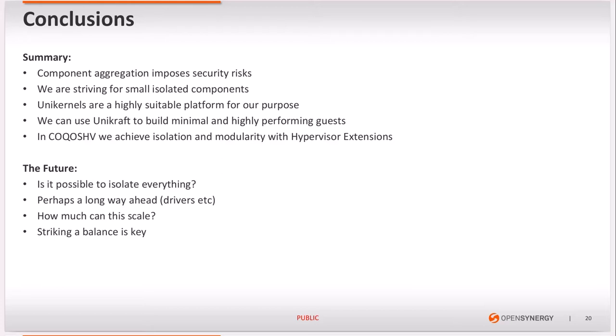Looking ahead, there is an obvious question about whether it is possible to isolate every single service or component, and the truth is that there are several challenges ahead. For instance, there are cases of very complex device drivers that depend on equally complex subsystems, requiring a lot of work to port to a Unikernel — in these cases it is probably better to stick with Linux. What we have learned from microkernels featuring a similar architecture is that scaling up involves its own challenges as well, and it should all come down to achieving the right balance. Thank you for attending this talk.